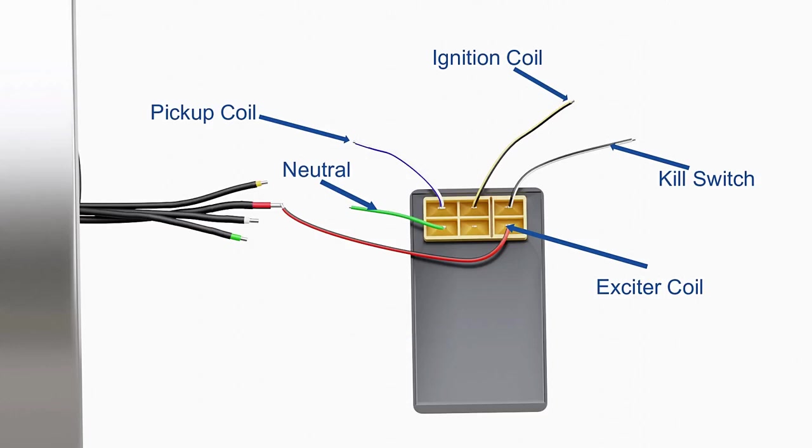The primary function of the CDI unit is to store electric charge and dump the stored charge when required. A capacitor inside the CDI unit stores the electric charge.